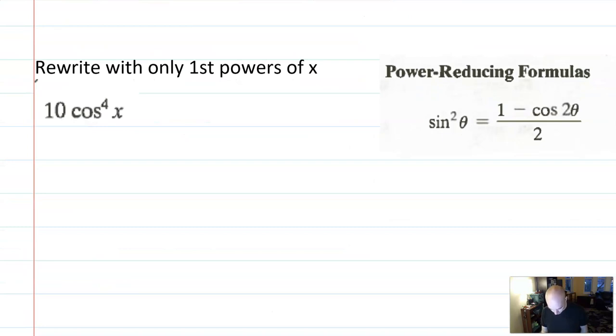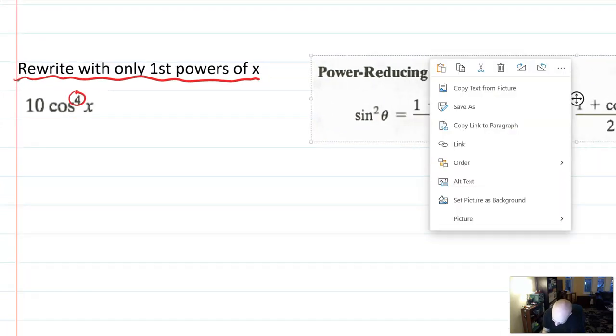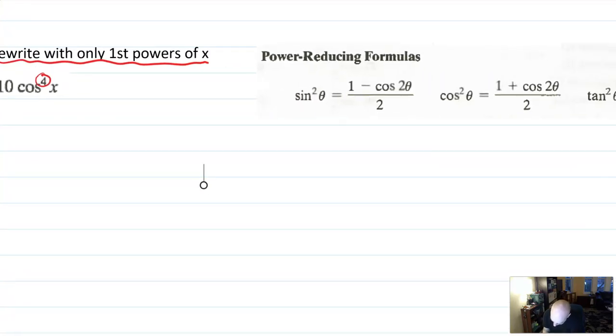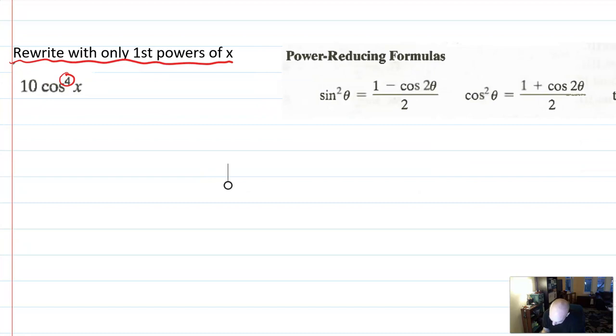So this is one from the homework, and the direction is really explicit. It says rewrite with only first powers of x. And what do we have right here? Well, we have a cosine to the fourth of x. Okay. So this is a situation where it is appropriate to use the power reducing identity. I have a cosine to the fourth. I need the identity for cosine squared. So I'm going to think about this as 10 cosine squared x squared. Okay. Let's keep going.